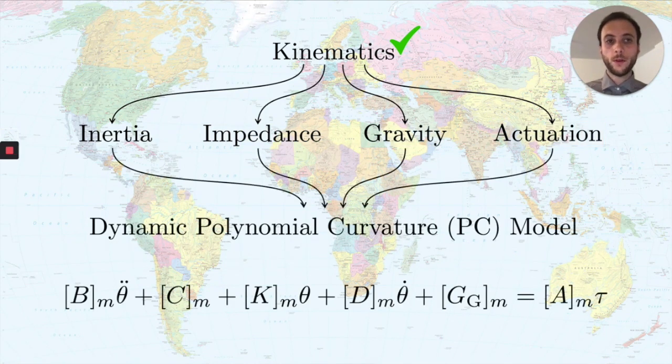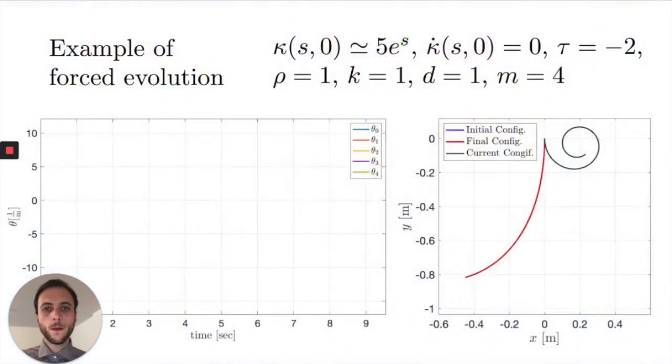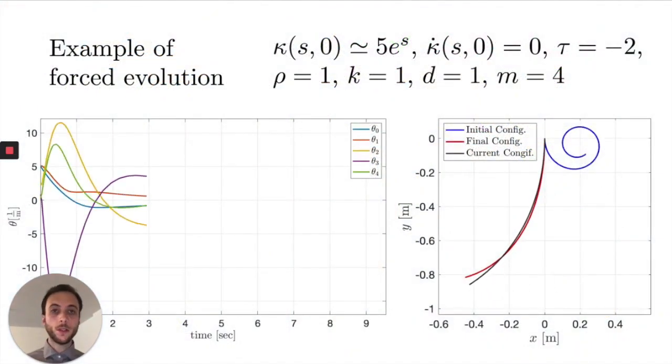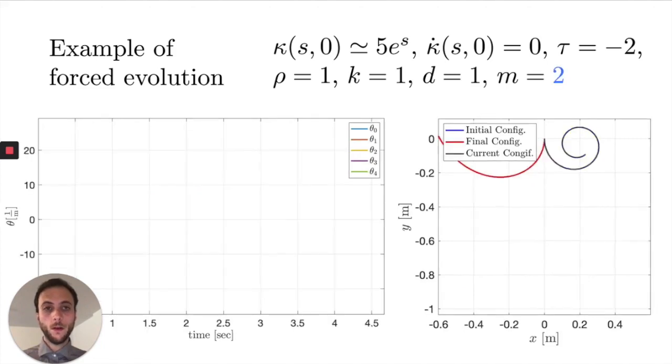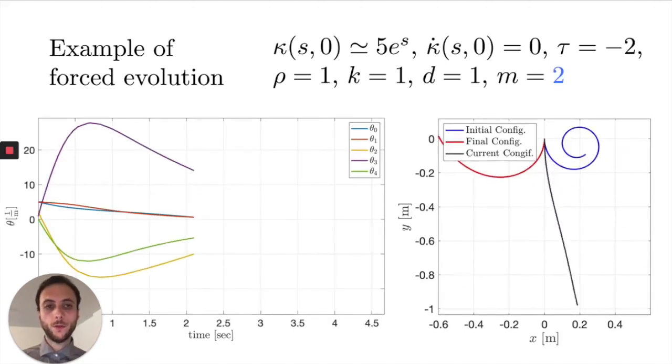We can now put everything together in a coherent model of our polynomial curvature segment. Just to convince you about the possibility of using such a model, I'm just showing some simulations of a robot starting with a quite strange initial condition, subject to a constant torque and to gravity field. This is the same robot with half the mass.